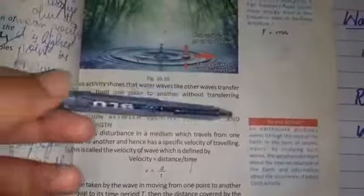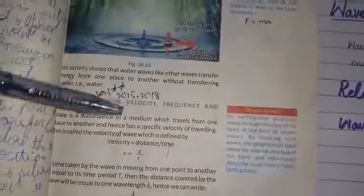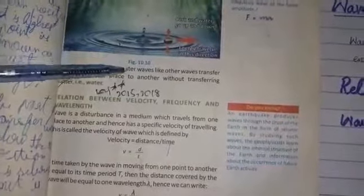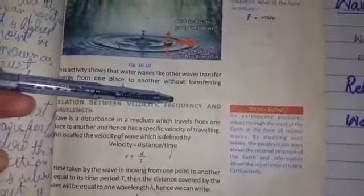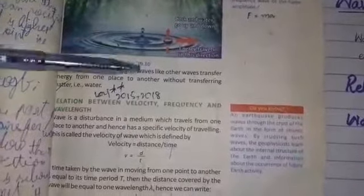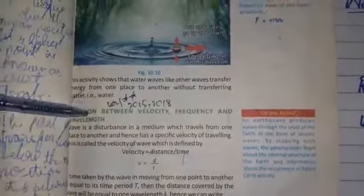Next topic is the relation between velocity, frequency, and wavelength. The wave moves forward. The frequency is the number of waves passing through a point in one second, and wavelength is the distance between two consecutive crests or troughs.